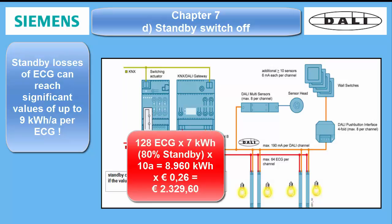Over one year, this means 1.7 to more than 9 kWh per ECG if not operated. At a 20% operation ratio, still up to approximately 7 kWh can be lost. Summarized to 128 ECGs, this means 900 kWh after all — and after 10 years, 9,000 kWh.